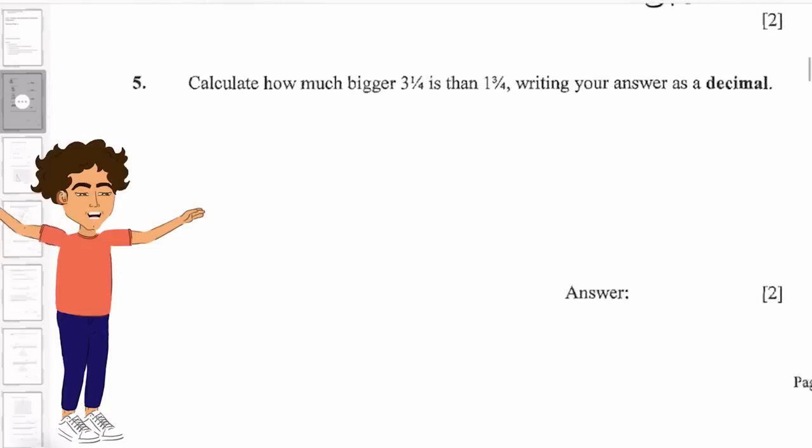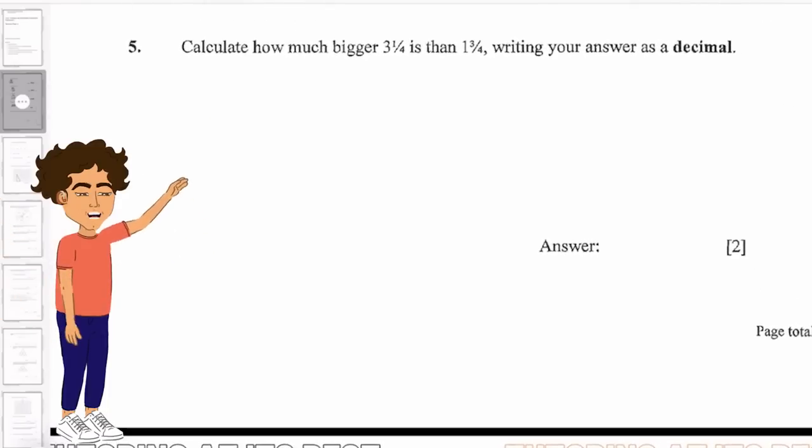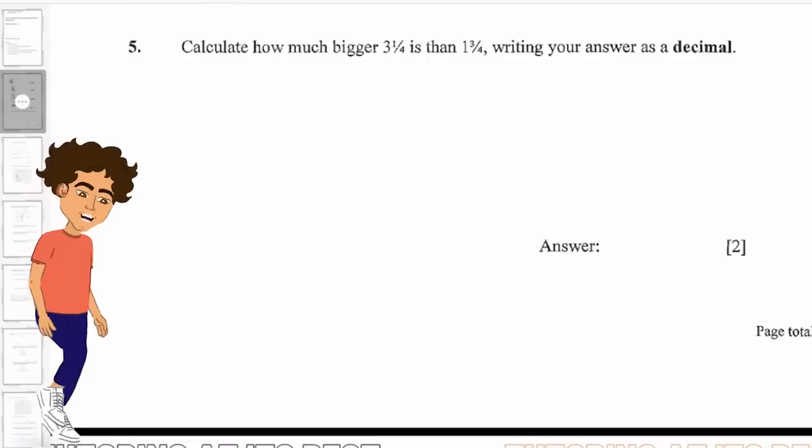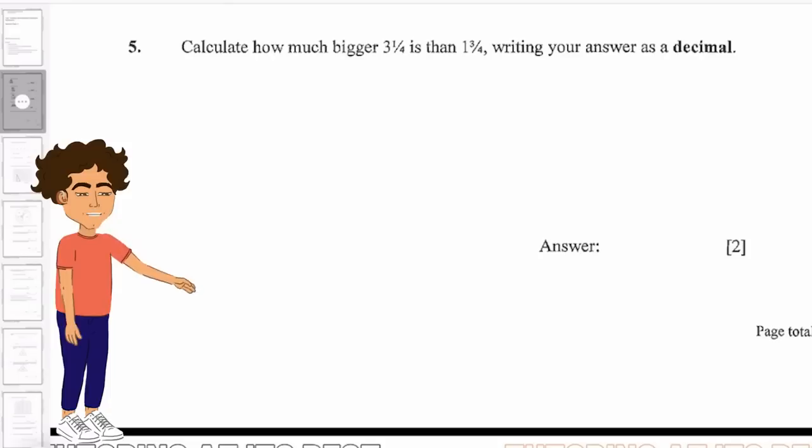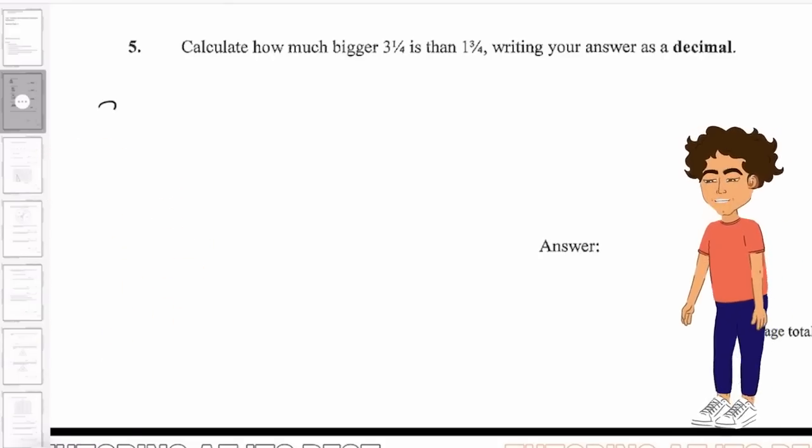Let's now go for question five. Calculate how much bigger 3 and 1/4 is than 1 and 3/4, writing your answer as a decimal. The first thing we're going to do is convert our fraction into a decimal.